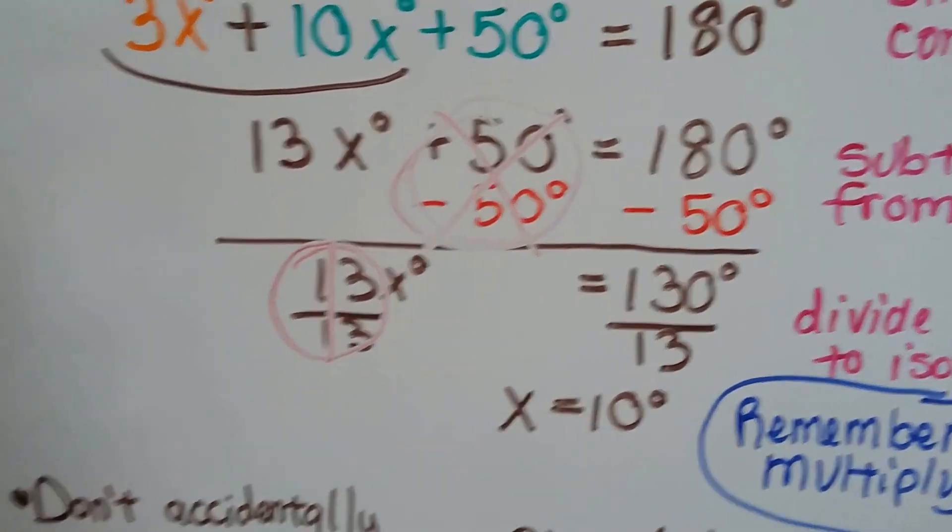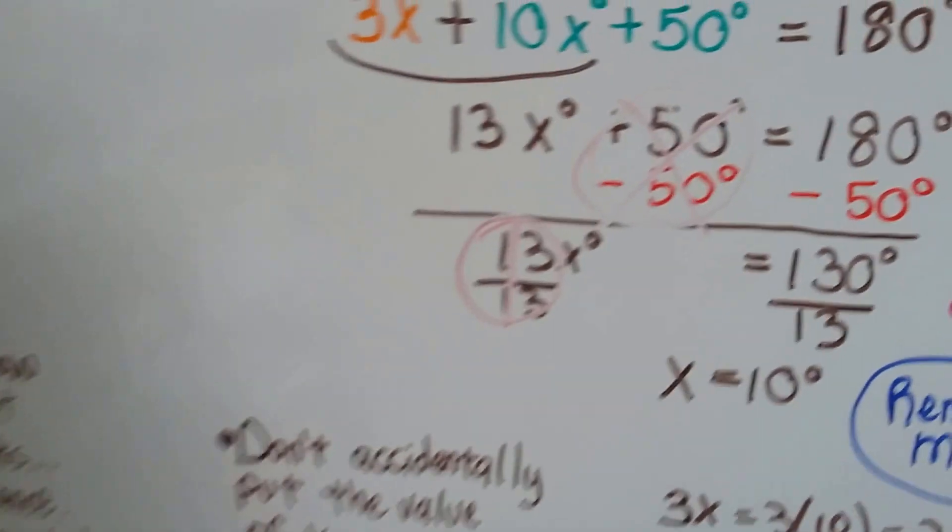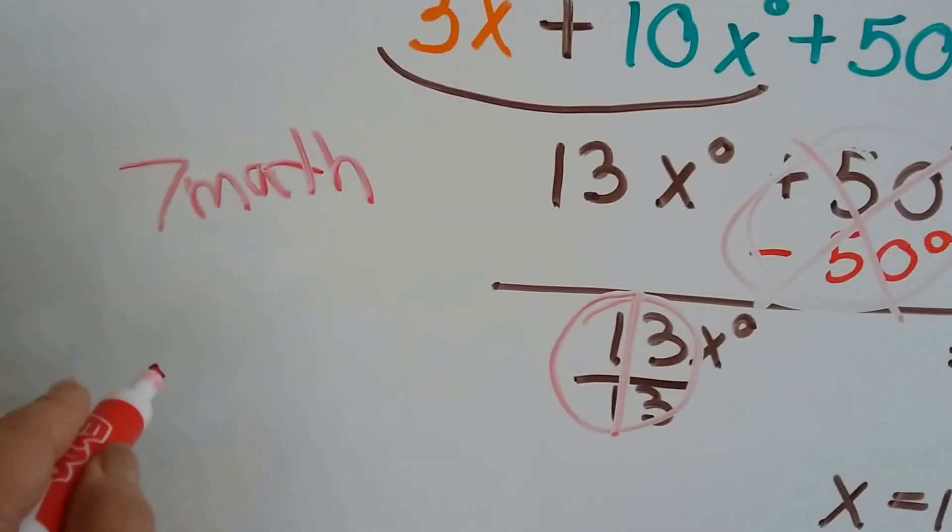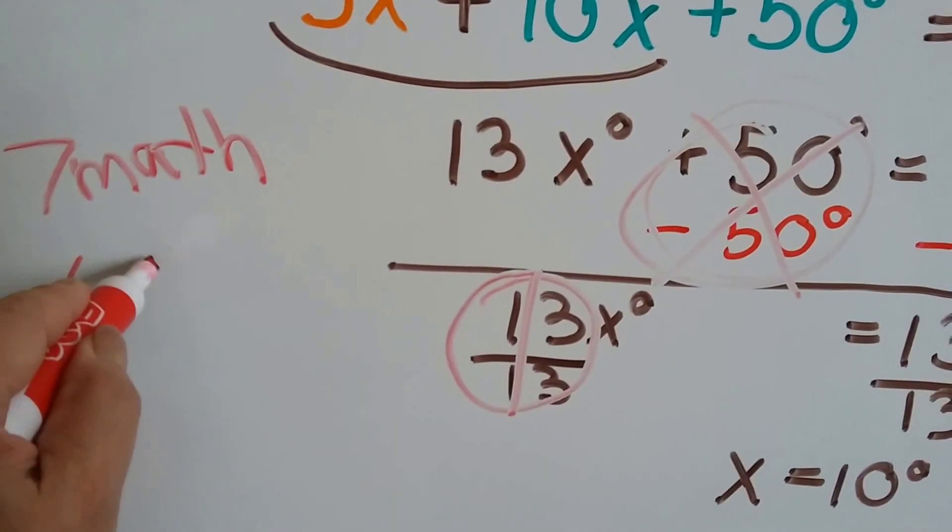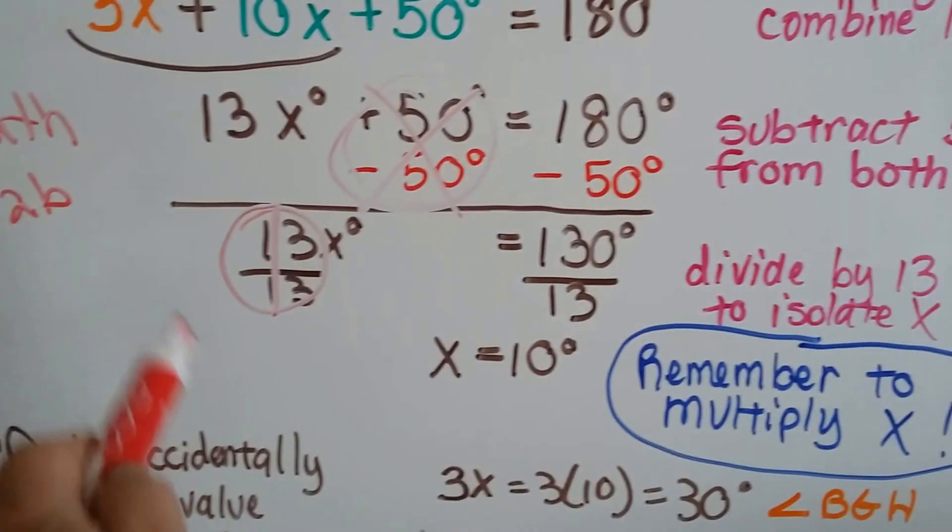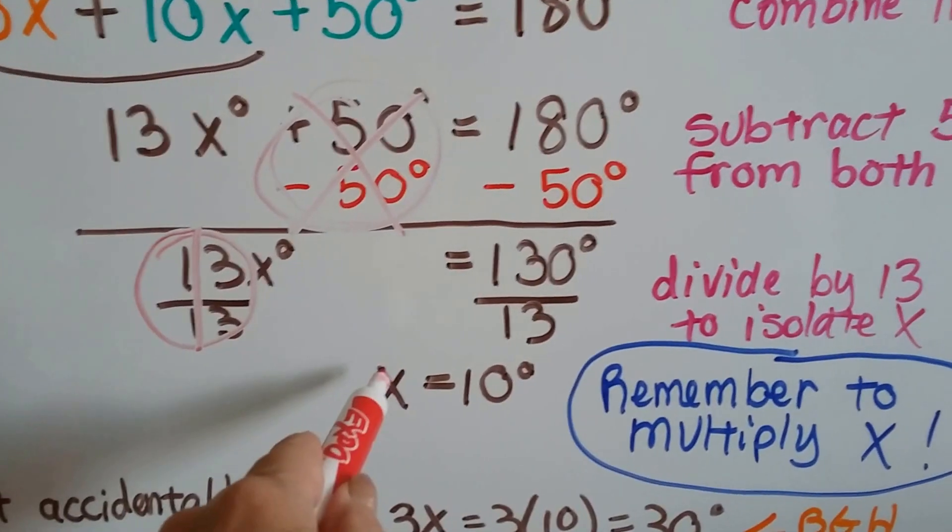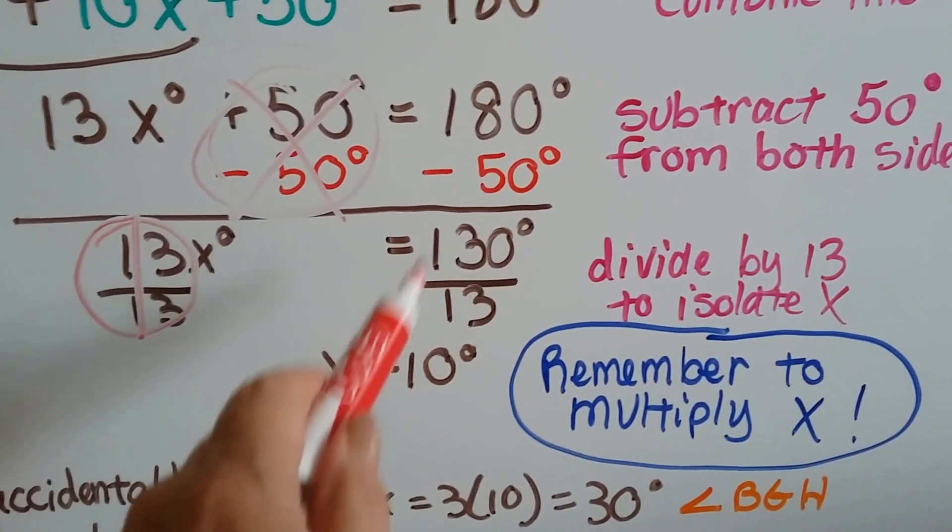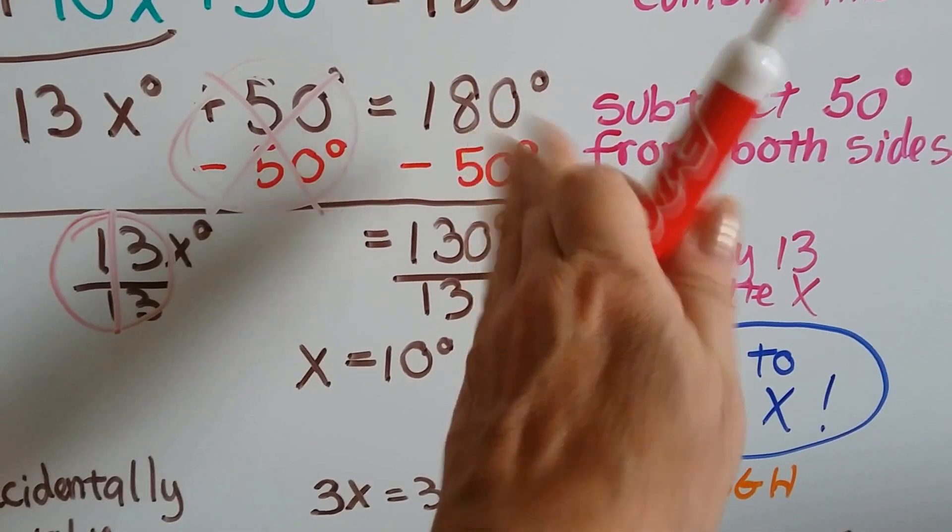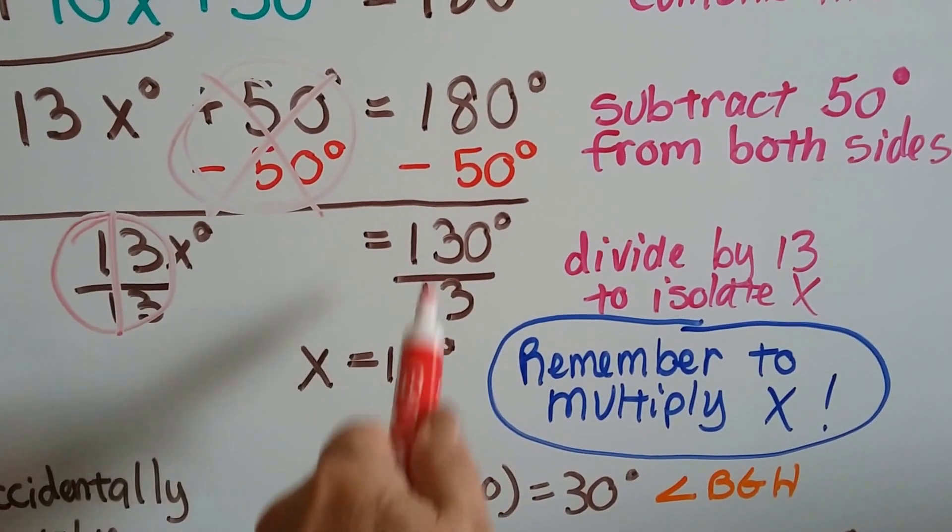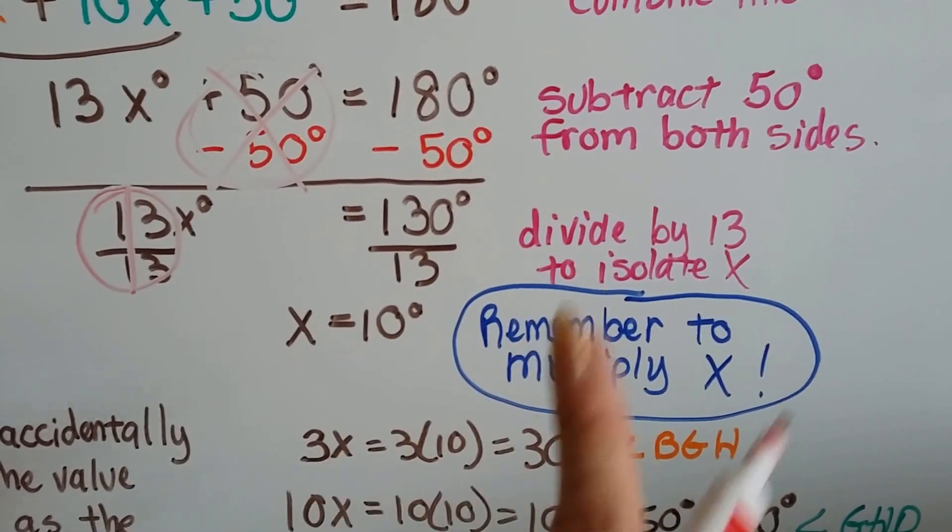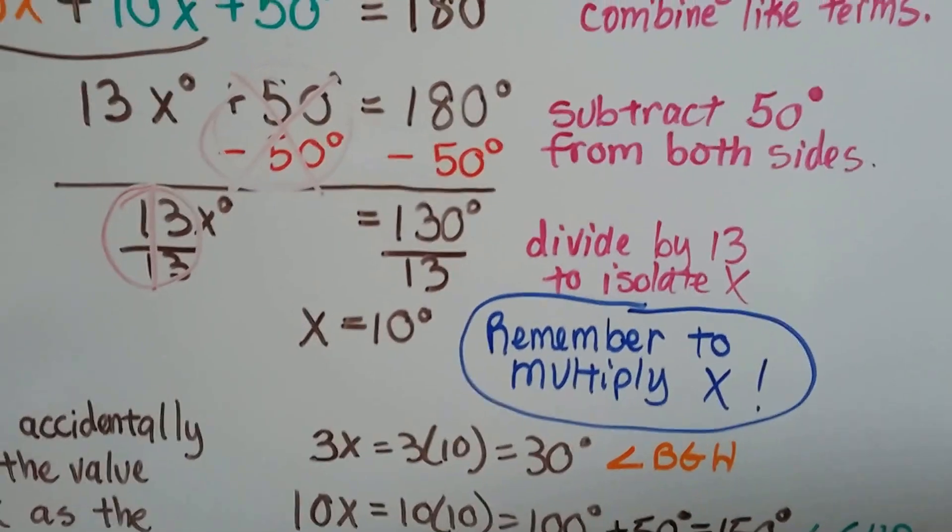If you don't know what I'm talking about, you need to go back to grade 7 math, video number 6.2b. That'll tell you about the invisible one. So now we've just got an x on this side. And on this side, we've got 130 divided by 13. 13 goes into 130 ten times. So x equals 10 degrees, but we're not done. Remember, we need to multiply x.